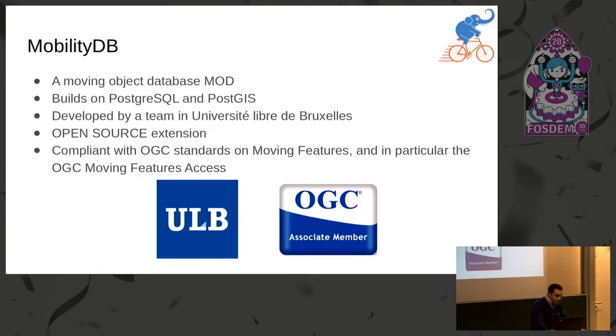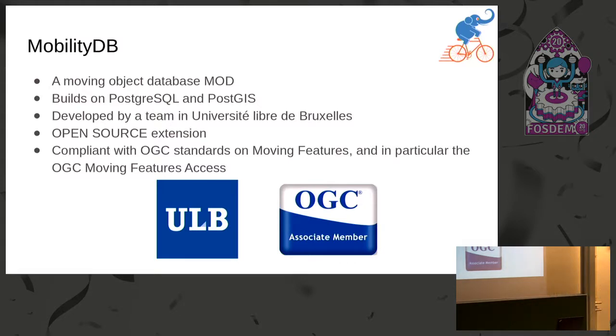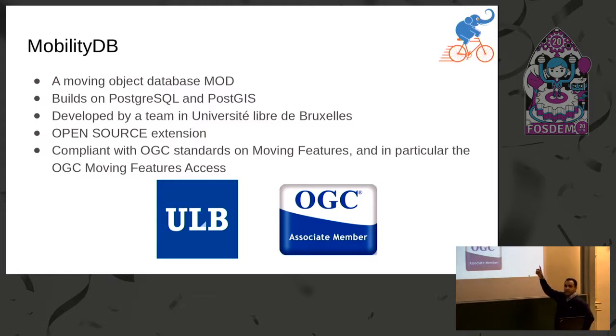To conclude, MobilityDB is a moving object database system — an extension of PostgreSQL and PostGIS. It is developed by the team at ULB, it's open source, available on GitHub, and it's compliant with the OGC standard for moving features. Thank you very much.